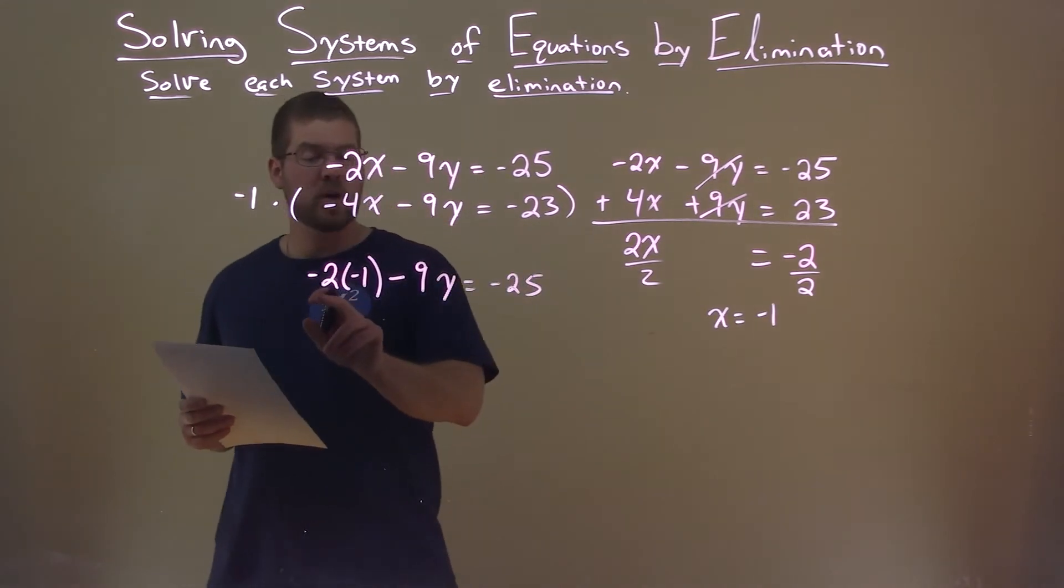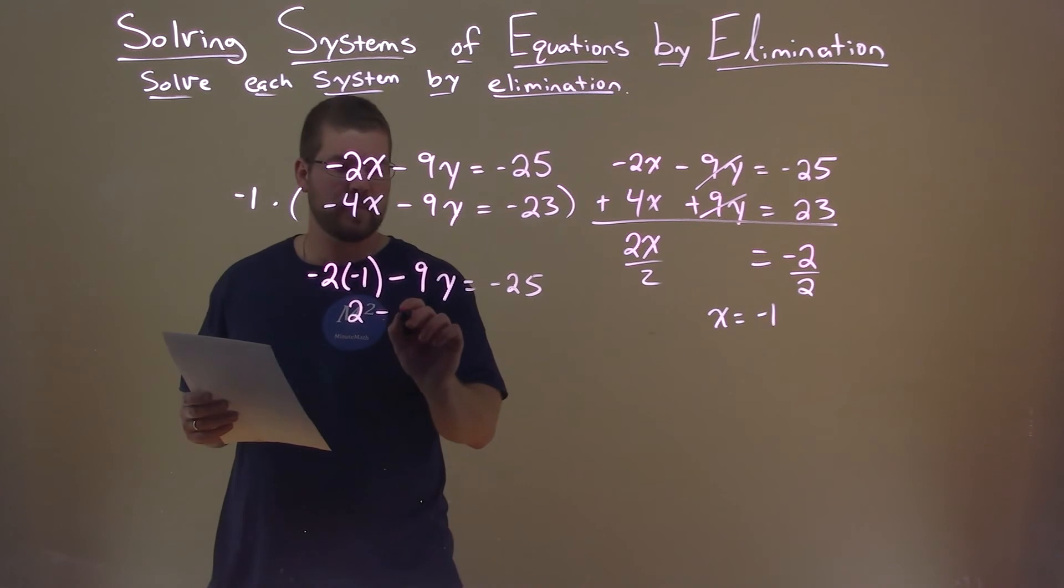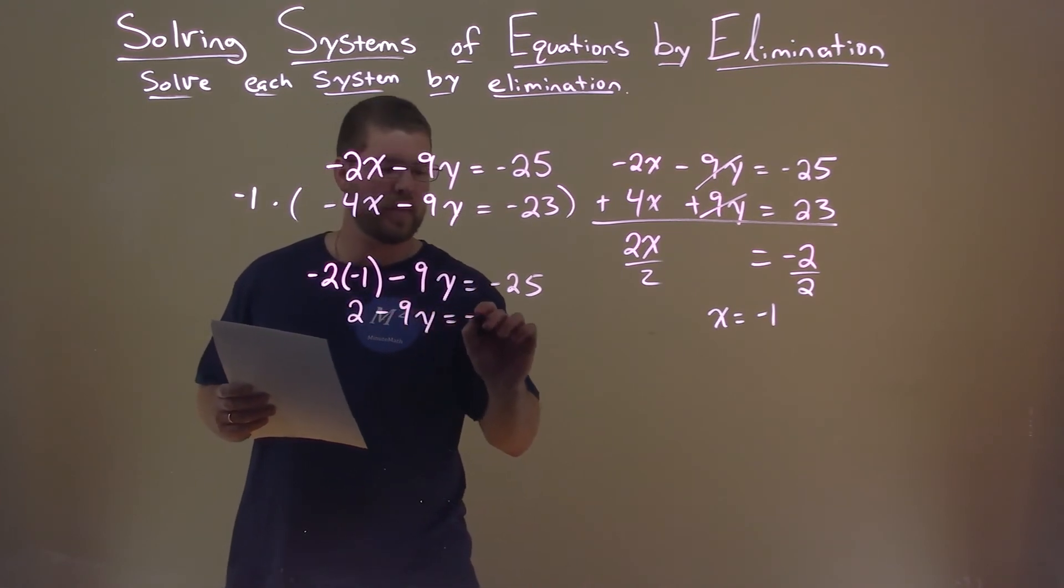Well, solve for y. Negative 2 times negative 1 is positive 2. Minus 9y equals negative 25.